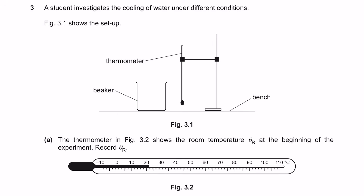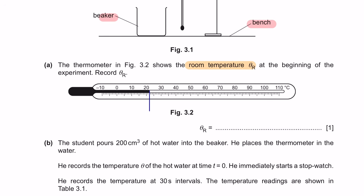Question 3. The student investigates the cooling of water under different conditions. Figure 3.1 shows the setup — a thermometer, beaker, and bench. Question A: the thermometer in figure 3.2 shows the room temperature theta r at the beginning of the experiment. Record theta r. Make sure your eyes are perpendicular to the scale when reading. The reading is 22 degrees Celsius. When stating temperature, include your units; answers should be in two significant figures.